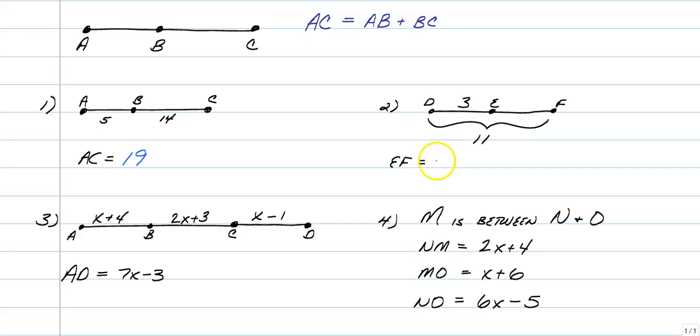Similar to this one right here, EF. We were given that DF, the whole segment is 11 and this little piece DE is 3. So how long is EF? And in that case, we would just subtract 3 from 11 and get 8 because EF is obviously not going to be 14.